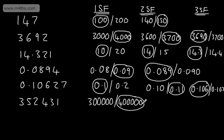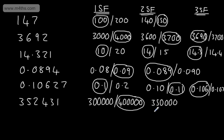That is correct to one significant figure. For two significant figures, we have a choice on the second significant figure — 350,000 or 360,000. The second significant figure is in the ten thousands column.